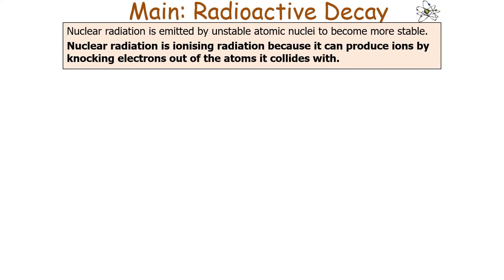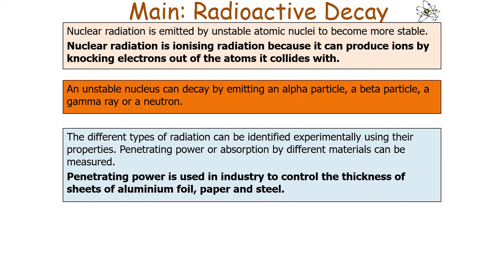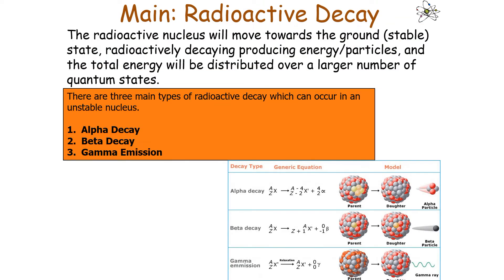To summarise: nuclear radiation is emitted by an unstable atomic nucleus to become more stable. Nuclear radiation is ionising radiation because it can produce ions by knocking electrons out of atoms it collides with. An unstable nucleus can decay by emitting either an alpha particle, beta particle, gamma ray, or neutron. The different types of radiation can be identified experimentally using their properties, such as penetrating power or absorption by different materials. Penetrating power is also used in industry to control the thickness of sheets of aluminium, foil, paper and steel.